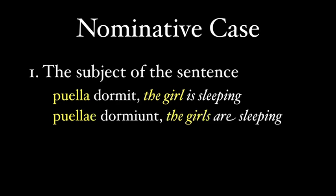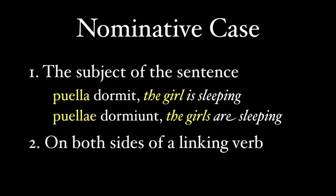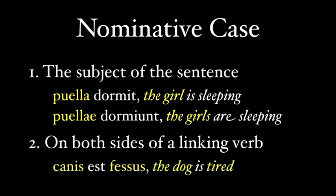If we change it to Puellae, plural, then we must change our verb to Dormiunt — the girls are sleeping. The nominative is the only case that has any sort of control over the verb. In sentences with linking verbs like est, both sides will use the nominative case. 'Canis est fessus' — the dog is tired — and both canis and fessus are nominative.